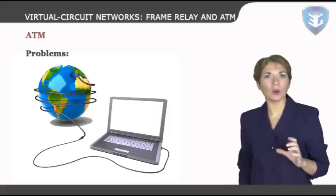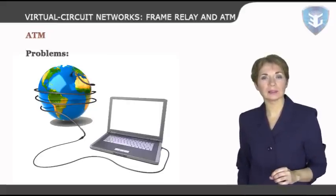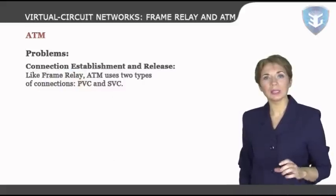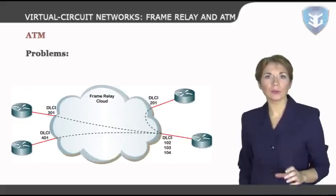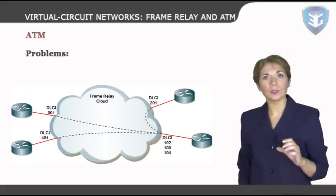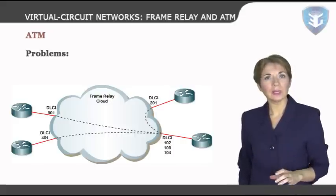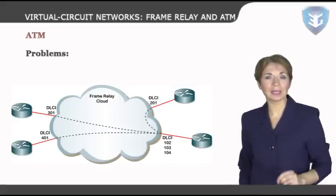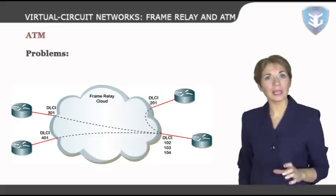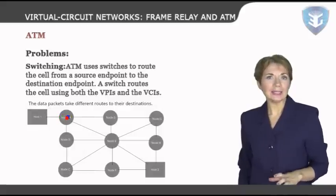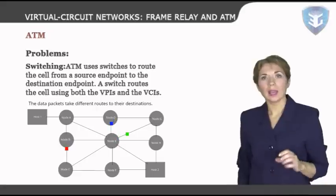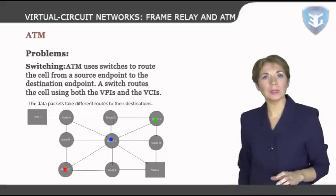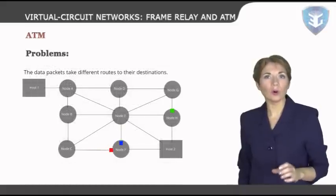Connection establishment and release: like frame relay, ATM uses two types of connections — PVC and SVC. PVC is a permanent virtual circuit connection established between two endpoints by the network provider. The VPIs and VCIs are defined for the permanent connections, and the values are entered into the tables of each switch. Switching: ATM uses switches to route the cell from a source endpoint to the destination endpoint. A switch routes the cell using both the VPIs and the VCIs. The routing requires the whole identifier — for example, a cell with a VPI of 153 and a VCI of 67 arrives at switch interface port 1.